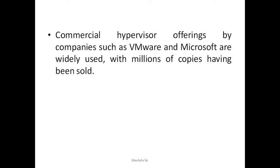Commercial hypervisors are available from companies such as VMware and Microsoft, with millions of copies sold. A key aspect of server virtualization is that, in addition to running multiple virtual machines on one machine, virtual machines can be viewed as network resources. NFV server virtualization masks server resources — including the number and identity of individual physical servers, processors, and operating systems — from server users. This makes it possible to partition a single host into multiple independent servers, conserving hardware resources, and to quickly migrate a server from one machine to another for load balancing or for dynamic switchover in the case of machine failure.